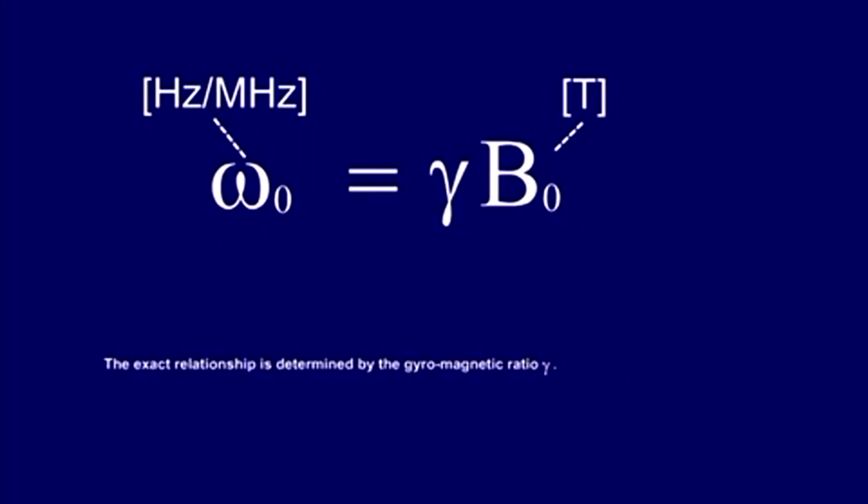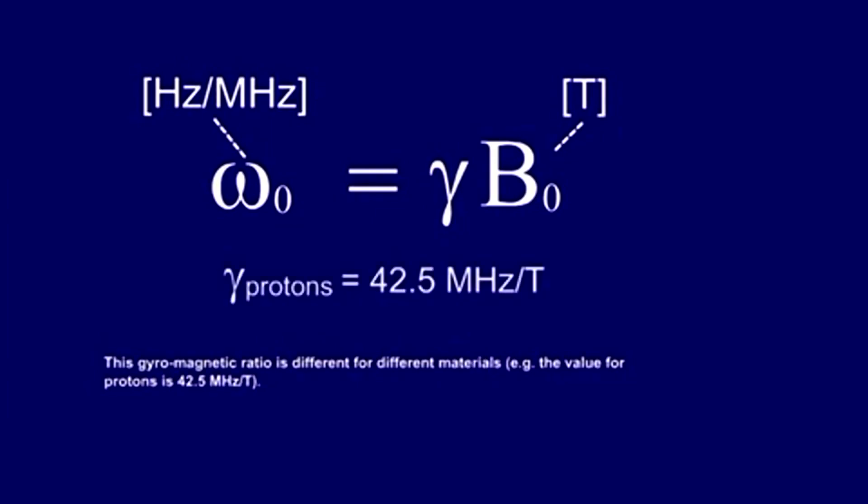This gyromagnetic ratio is different for different materials. For example, the value for protons is 42.5 megahertz per tesla. It can be compared to an exchange rate, which is different for different currencies.